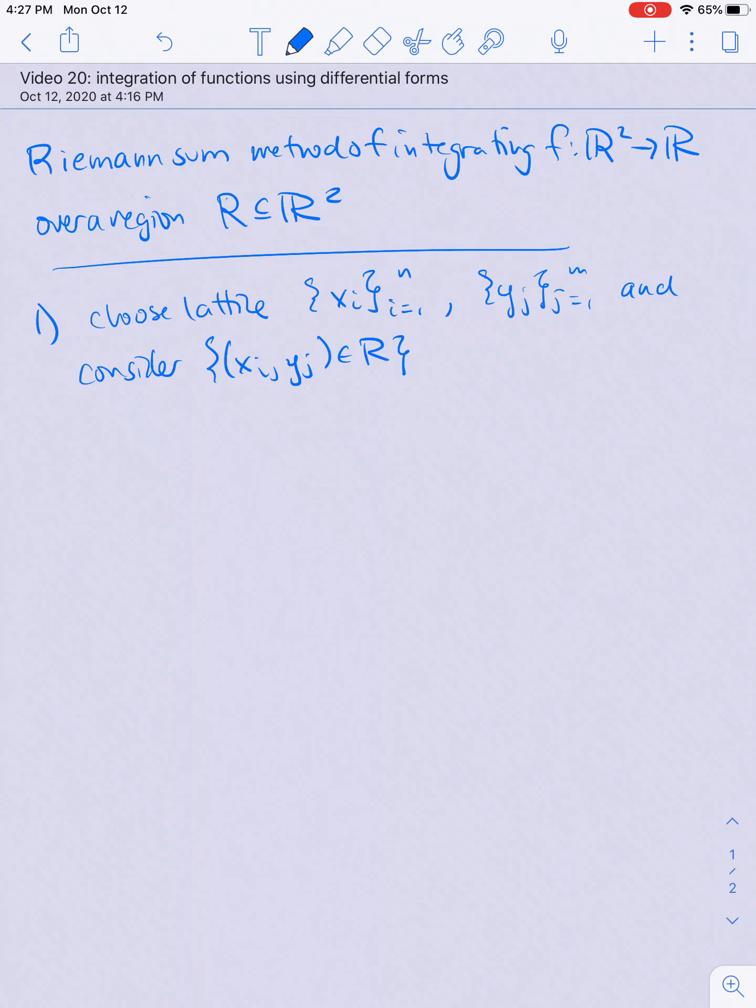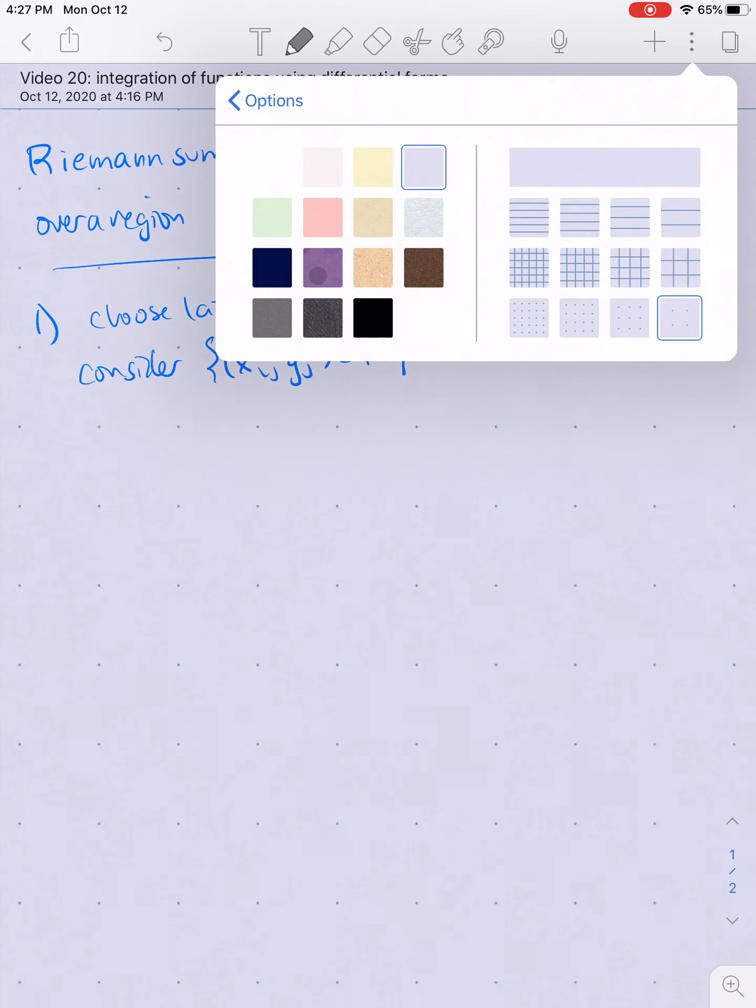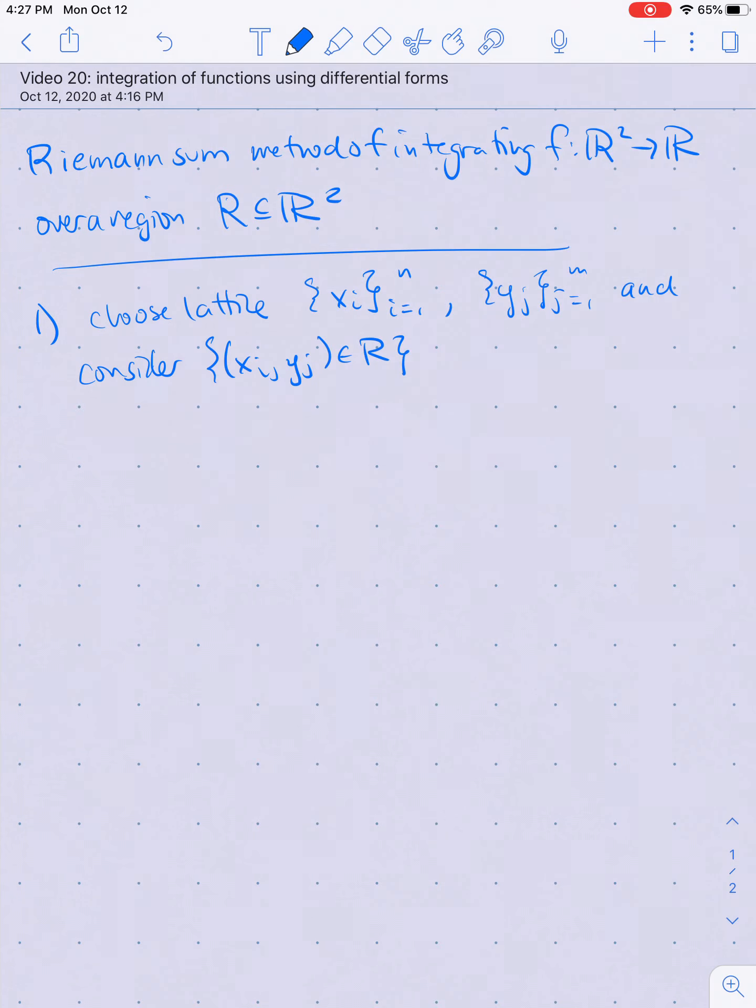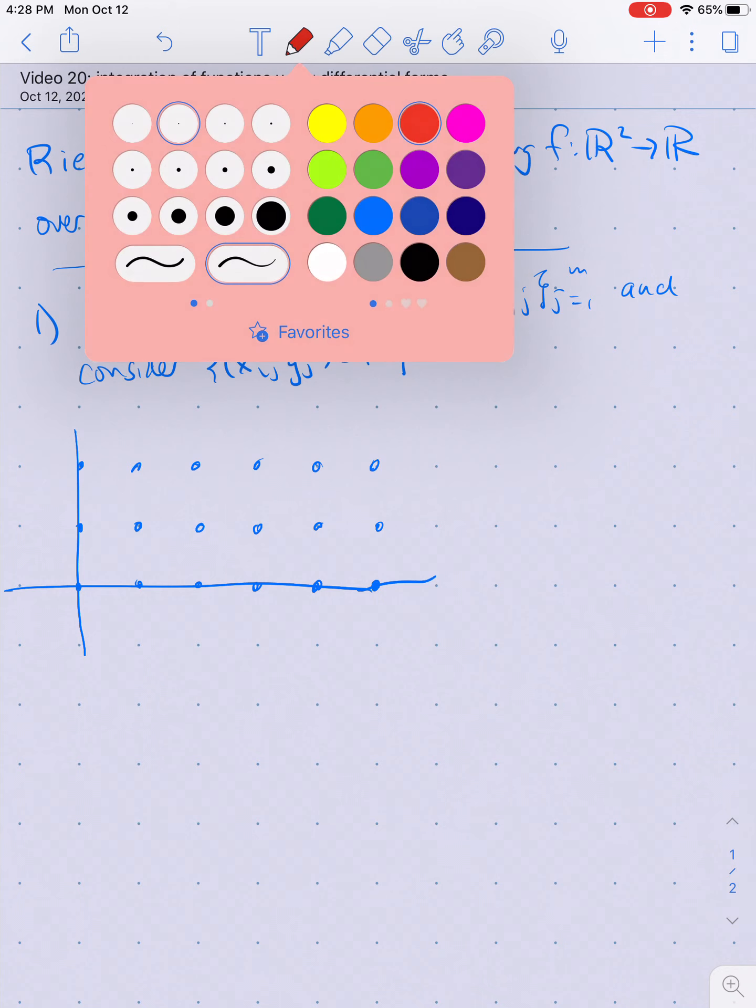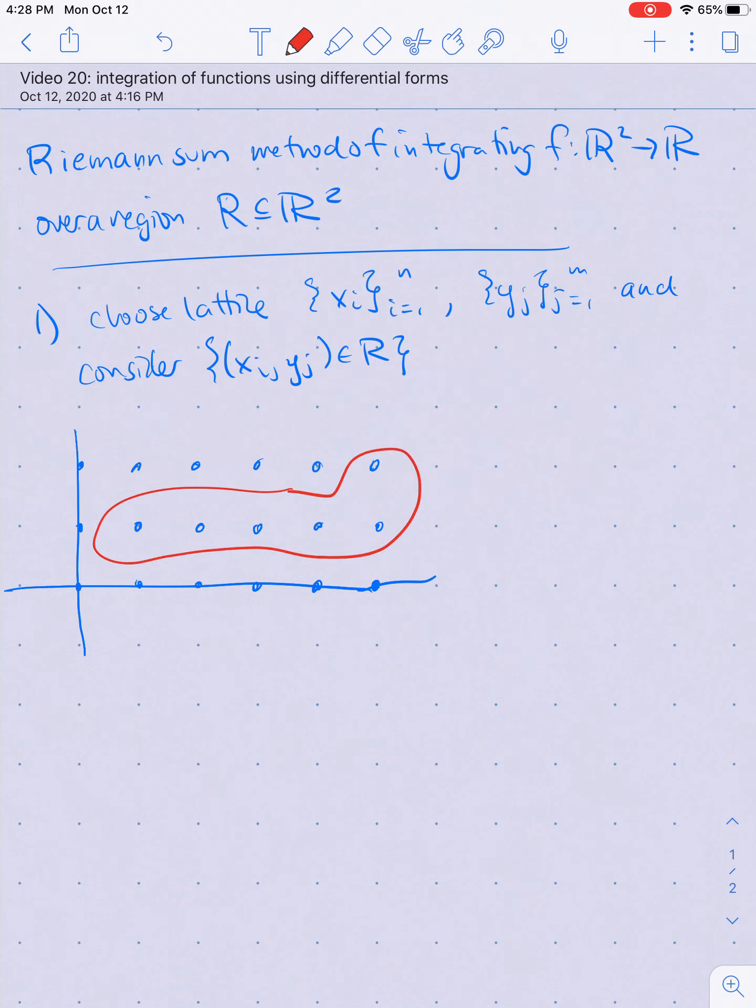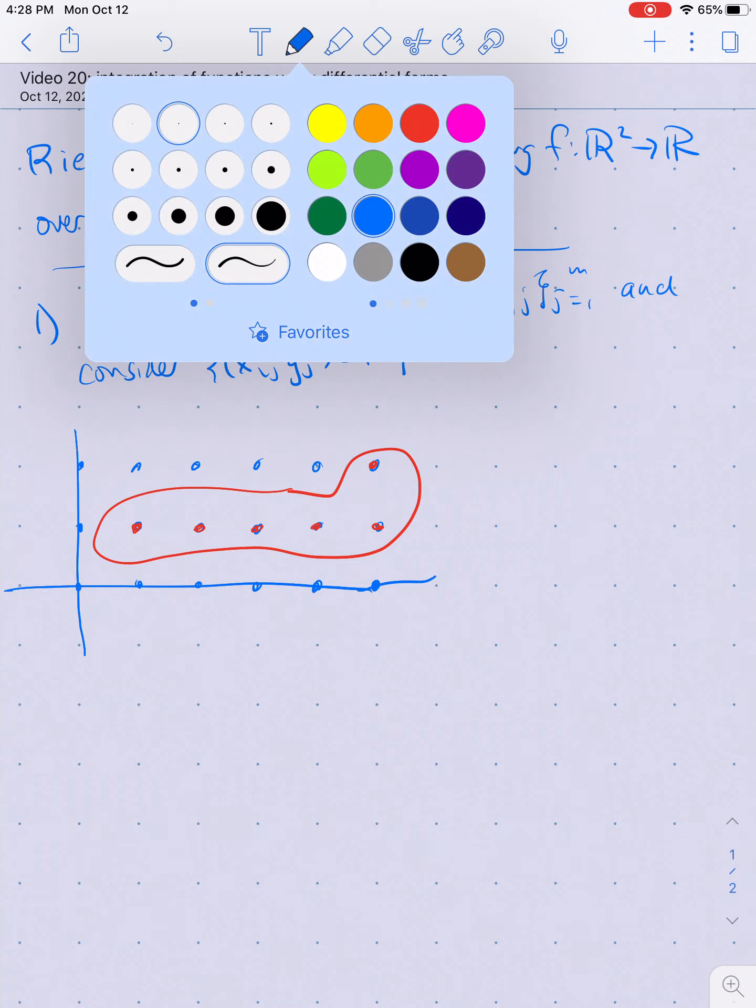Say I've chosen my lattice to look like this. My coordinate axes are here and here, and I've chosen to pick points. My x_i's are like zero, one, two, three, four, and five, and my y_j's are zero, one, and two. Then I should consider all these points. My region R looks something like that, and I'll consider all of these pairs (x,y) in my region.